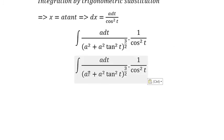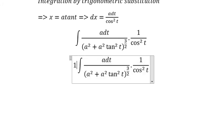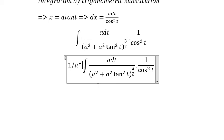We put a² outside, and we have 3/2 as the power, so that gives 1 over a³.